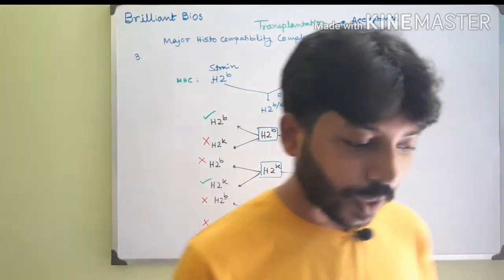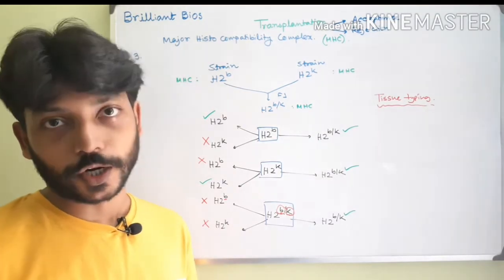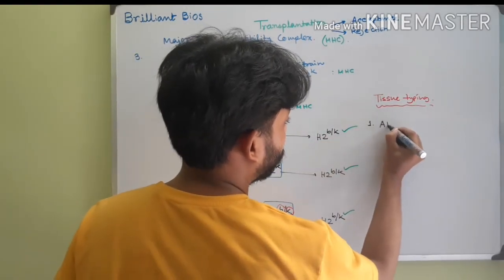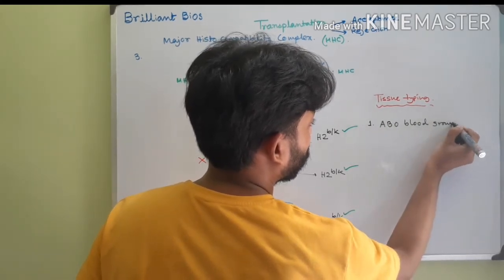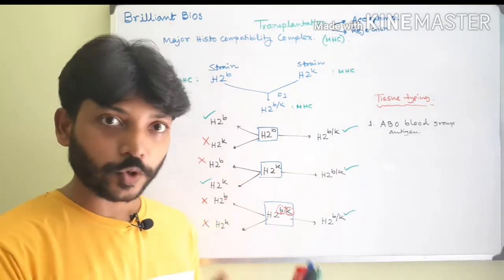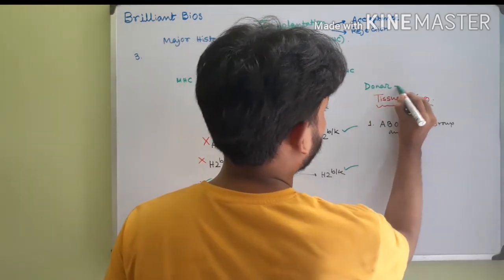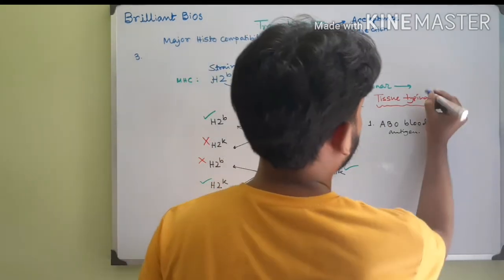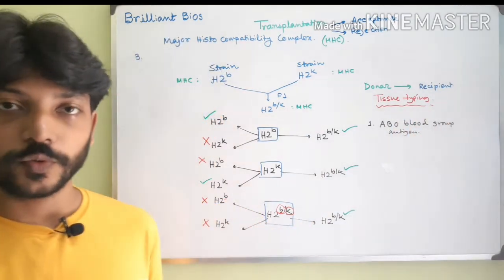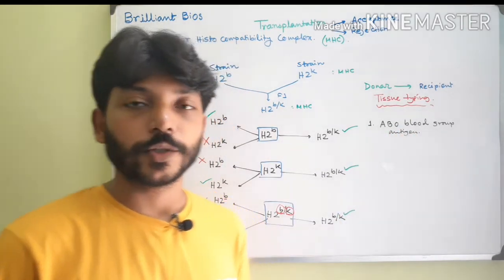Now I will show you three important molecules responsible for very fast tissue rejection. The first is the ABO blood group antigen. This is very important — if there is any mismatch between the ABO blood group of the donor and recipient, tissue transplantation rejection can occur. As we know, there are two antigens: A antigen and B antigen.